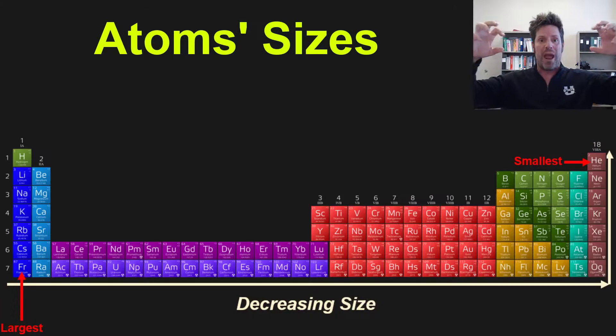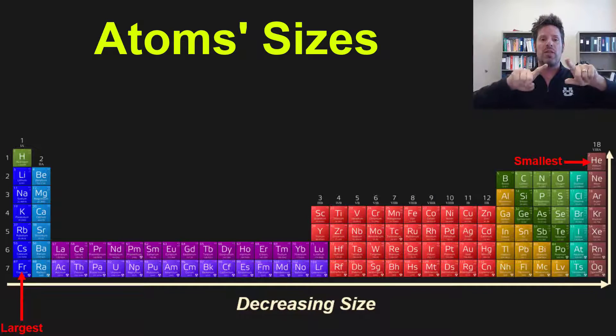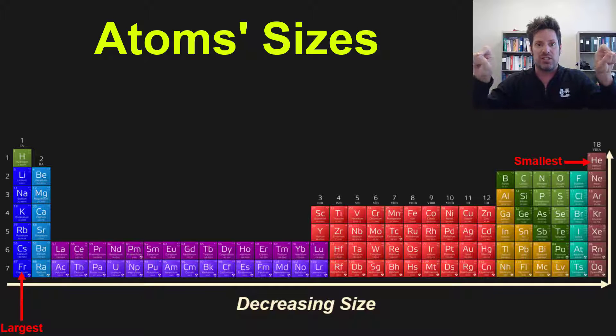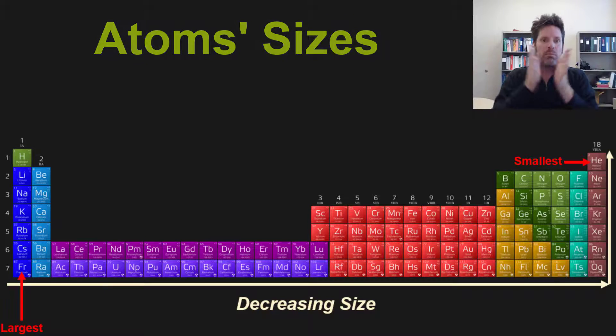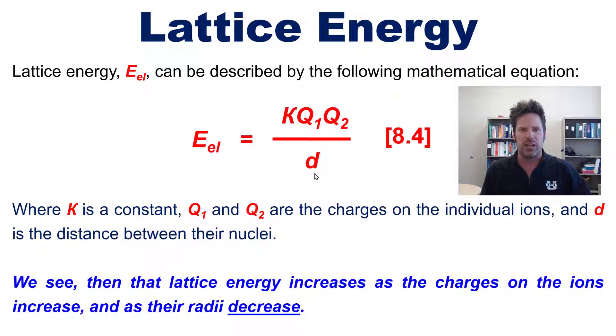Now in practice this means that the larger the two atoms are relative to each other, the longer their bonding distance and the weaker the bond. See, longer distance means weaker bond.